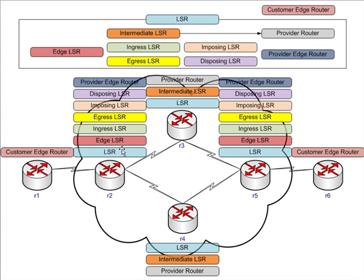As you can see, there are about seven different ways to label these routers. They're LSRs — that's the generic term. They're edge LSRs because they sit on the edge of the network. They do ingress, egress, imposing, and disposing — four different ways to describe two things. They are also provider edge routers. The intermediate or P routers could actually have four synonyms if you include core router, which just shows how messy this can get.